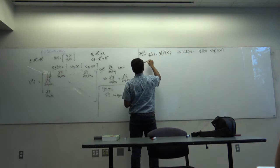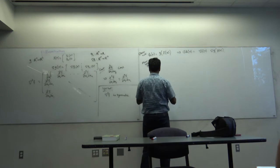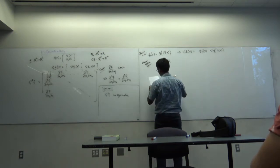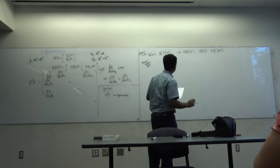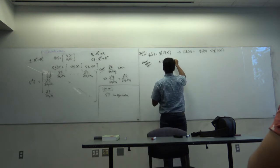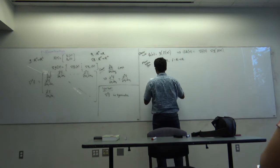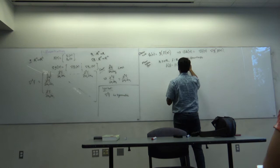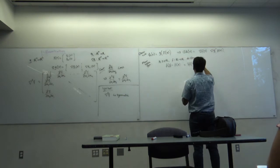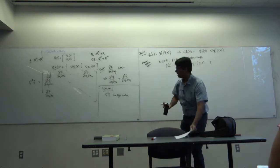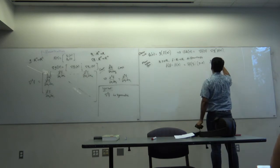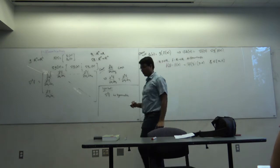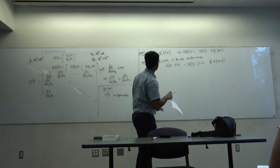Next is the mean value theorem. In single dimension, if x and y are in R and f is a function from R to R, then the mean value theorem says f(y) - f(x) = ∇f(c) · (y - x), where c lies between x and y.